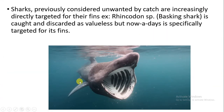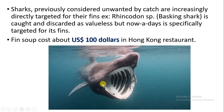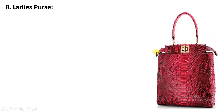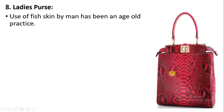Sharks were earlier considered unwanted bycatch, but now more sharks are being captured specifically for their fins. Species like the rain codon species and basking shark are specially captured to obtain the fins. Fish fin soup is quite expensive — about one hundred dollars in the U.S., which is about seven thousand four hundred and forty-seven rupees. It is a very expensive dish seen in Hong Kong restaurants.